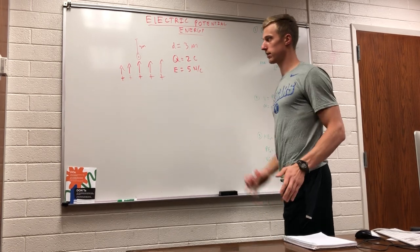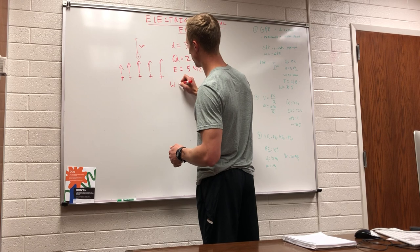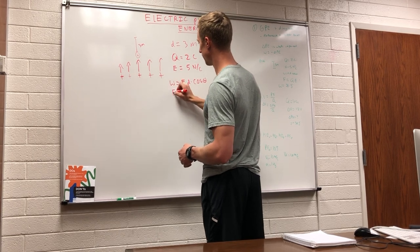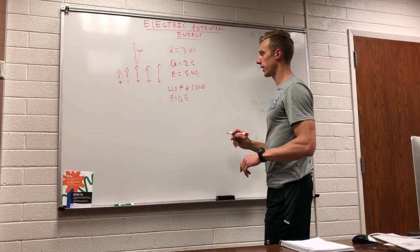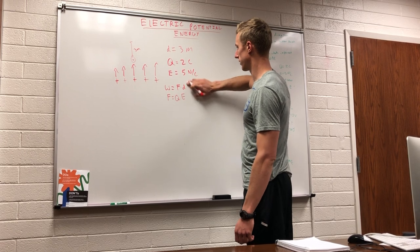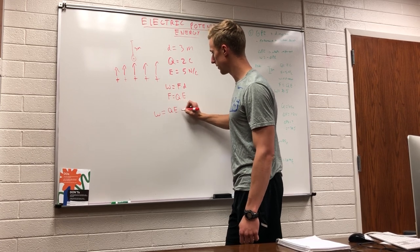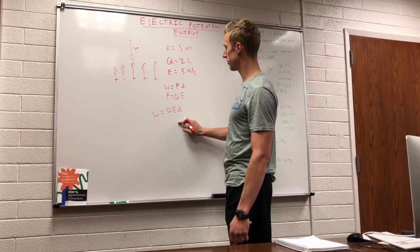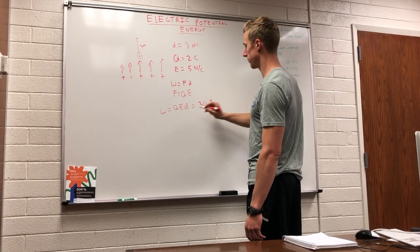Hopefully you paused it. We know from the physics equation sheet that work equals force times distance times cosine of theta, and that force equals charge times the electric field. The cosine here is just going to be one, so we don't need to worry about the angle. That gives us work equals charge times electric field times distance — W = qEd. Plugging in: two times five is ten, times three gives us 30 joules as our answer for the work done.